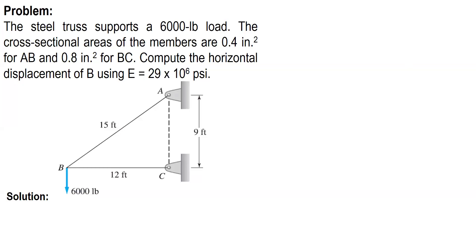Another problem that I'm going to solve is about simple strain. Here's the problem. The steel truss supports a 6,000 pound load. The cross-sectional areas of the members are 0.4 inch squared for AB and 0.8 inch squared for BC. Compute the horizontal displacement of B using E equal to 29 times 10 raised to 6 psi.